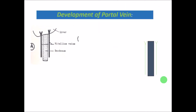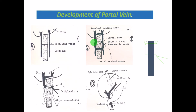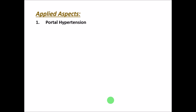Regarding development of the portal vein: it develops from two vitelline veins — right and left — which start communicating with each other through proximal, distal, and dorsal anastomoses. Later, parts of these begin disappearing, and finally it becomes the portal vein and its tributaries.